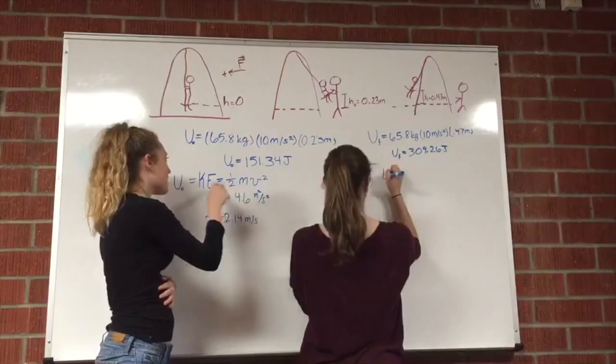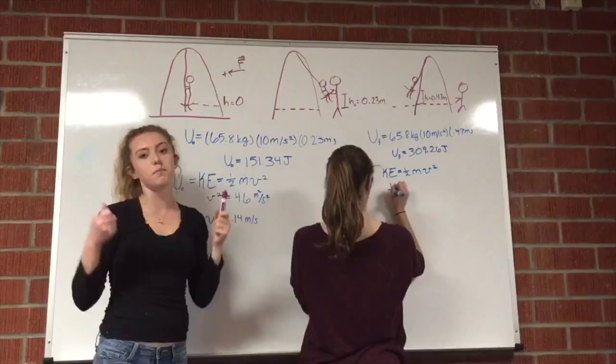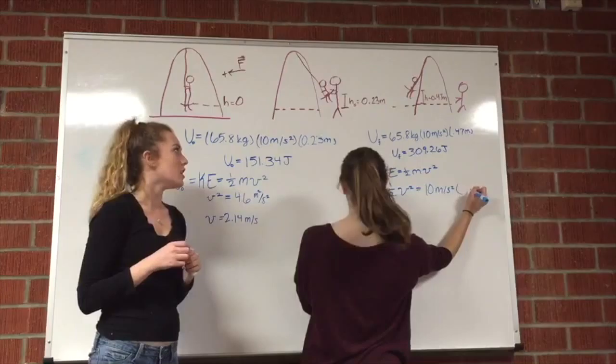Theoretically, if Jackie had let go of Cassie right here and not pushed her at all, this would have been converted directly into kinetic energy. She would have had a speed of 2.4 meters per second at the bottom, and then would have reached the same height.